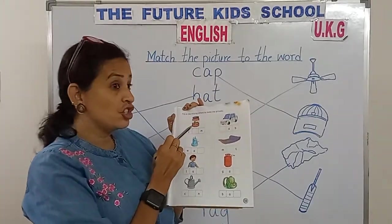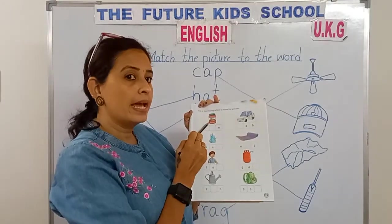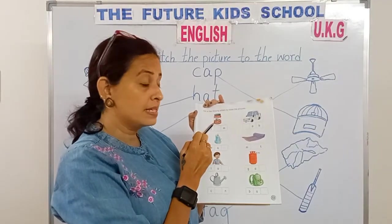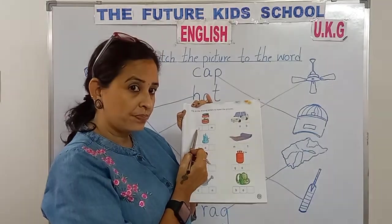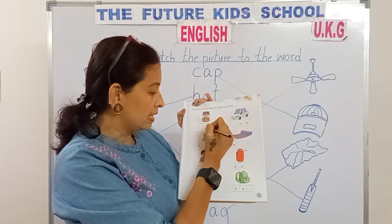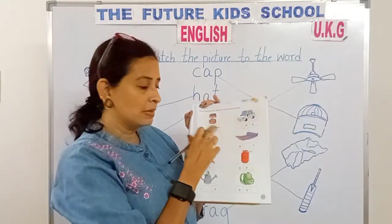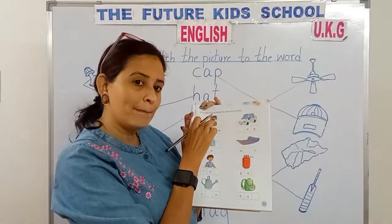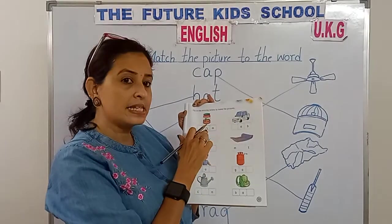This is jam. J-A-M spells jam. So we've got the letter J — fill in the letter A, then M. J-A-M. The missing letter is A.